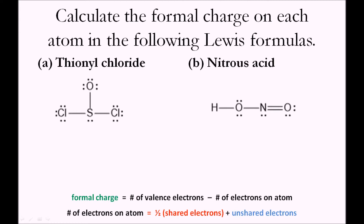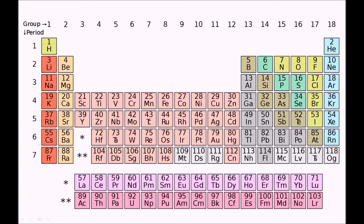To begin, we'll find the number of valence electrons in each of the atoms in thionyl chloride. We have oxygen, sulfur, and two chlorine atoms that are identical. To find the number of valence electrons, we look at the periodic table, identify the group that the atoms are in, and find the number of valence electrons they have.